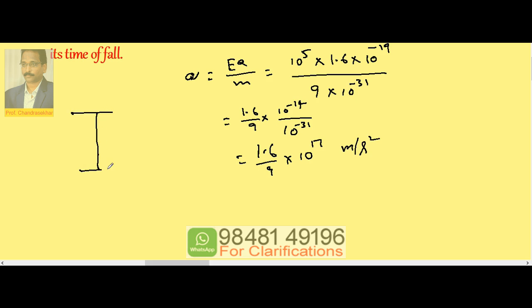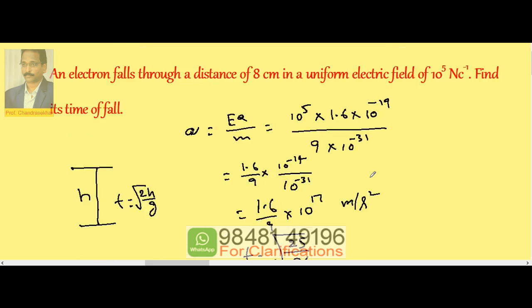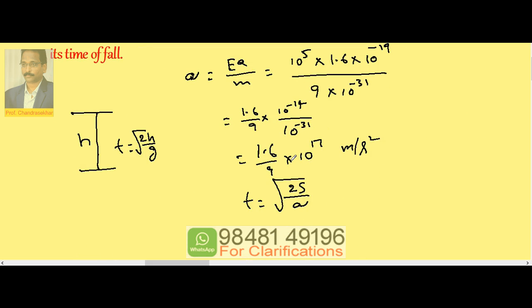Whenever we consider a freely falling body, if the body falls through h distance, the time of fall is given by root 2h by g. Same concept here we can apply: it is root 2s by a, because the electron is falling through s distance in the electric field. The distance through which it falls is 8 centimeter.